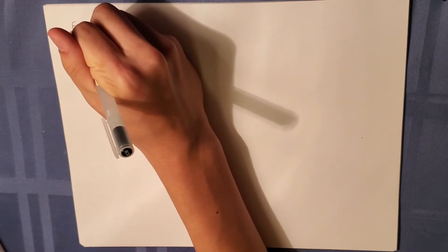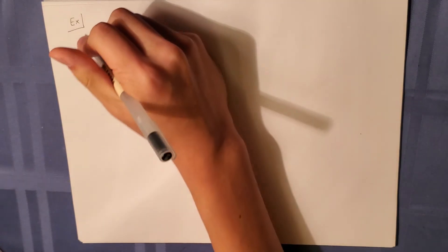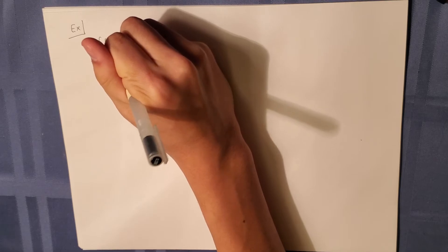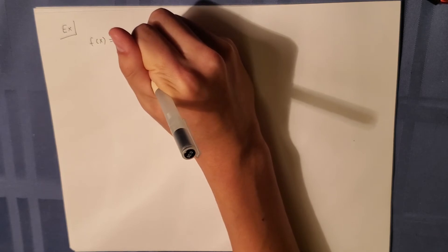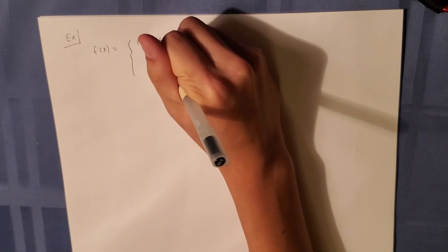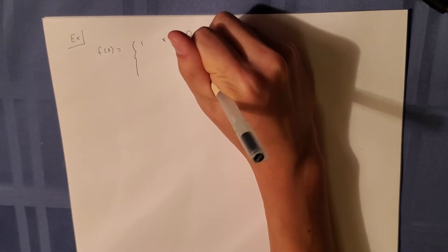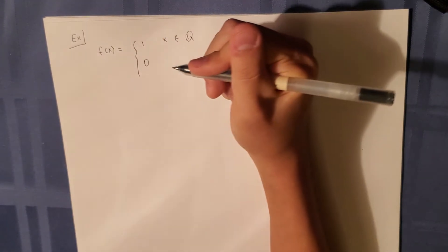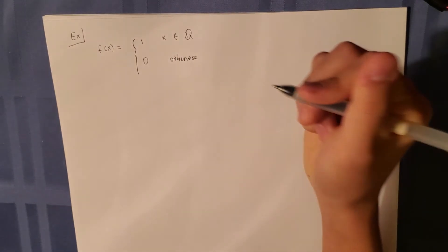So let's have an example. Let f of x equal 1 when x is rational and 0 otherwise, or irrational.